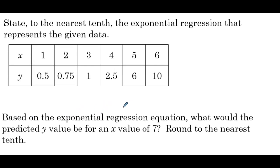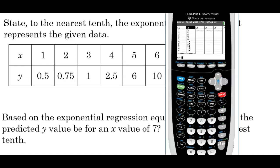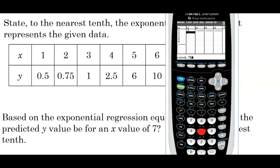State to the nearest tenth the exponential regression that represents the given data — that same data set from the first example. So: stat, edit, clear out our lists. L1 will be 1 through 6. L2 will have 0.5, 0.75, 1, 2.5, 6, 10. We have the same number of entries and typed everything in correctly.